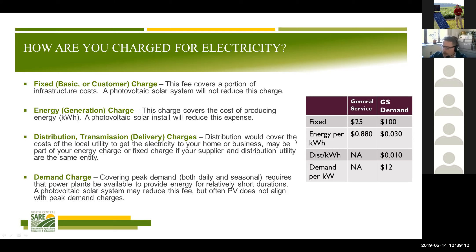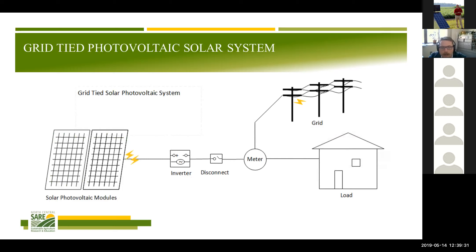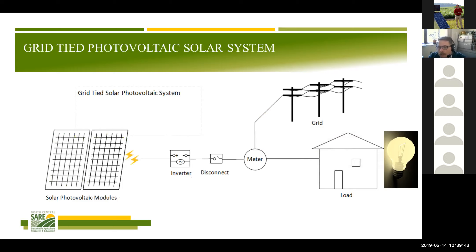Spend some time with your electric bill — you might learn some things; they're sometimes kind of complex. Let's think about a line diagram of a solar array and a load. In this case the load is your business or farm, and you are connected to the grid. At night or early in the morning, electricity comes from the grid, and we look at our rate schedule to determine the cost or value of that electricity.